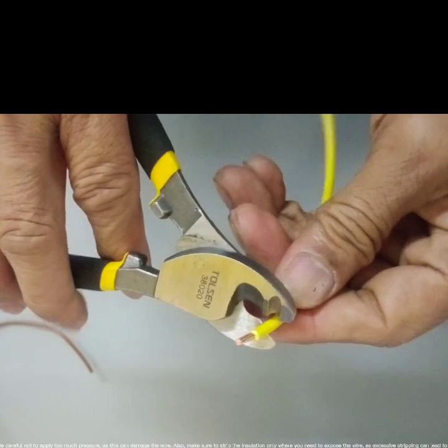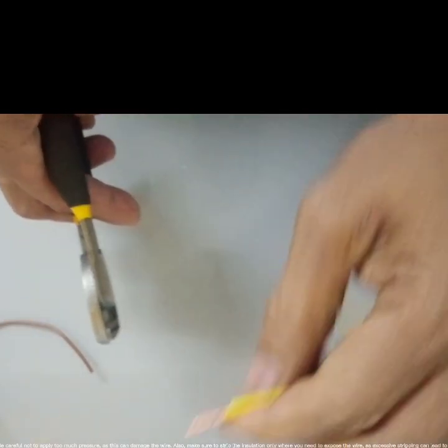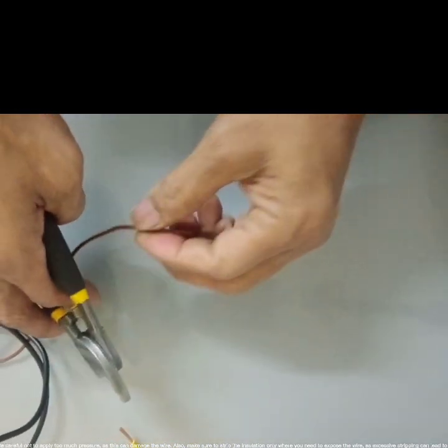Next, squeeze the handle to strip the insulation off the wire. Be careful not to apply too much pressure, as this can damage the wire.